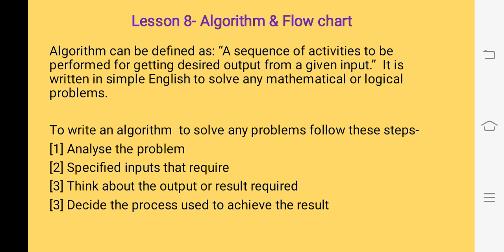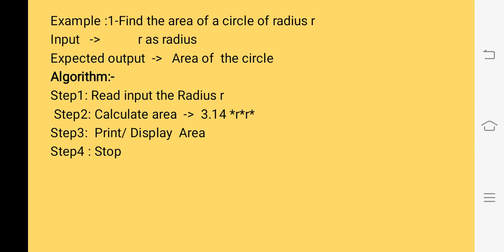To write an algorithm, we will follow some steps. First, we will analyze the problem that we have to solve with the help of Algorithm. Second, we will decide the inputs that we require. Third, we will decide the outputs — the result we want. Next, we will decide the steps or process with the help of which we will achieve the result.